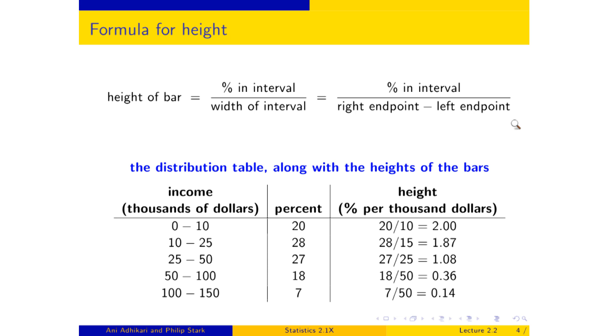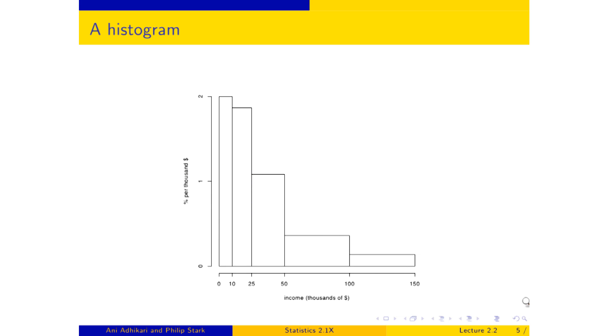Here we go. Isn't it lovely having a computer? Bang! All the heights computed at once. So here's our old friend 2 again. We took the 20% here, and we divide it by the width of the interval, which is 10. 20 divided by 10 is 2. The next one, 28% divided by the width of this interval is 15. 25 minus 10. And you get 1.87. You can see that this bar, the second one, will be shorter than the first. And so on. And as it happens for these data, the tallest bar is the first one, and then they just keep dropping down. So shall we look at this in a picture? I think so, because this table has gotten even more complicated with a heights column.